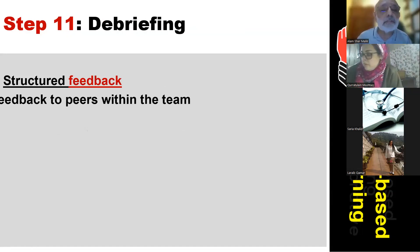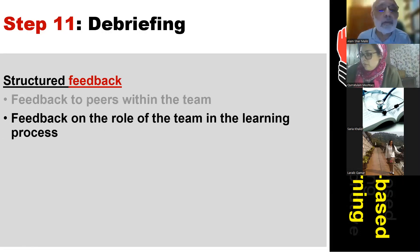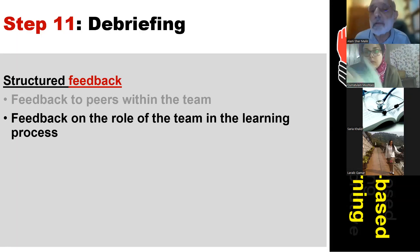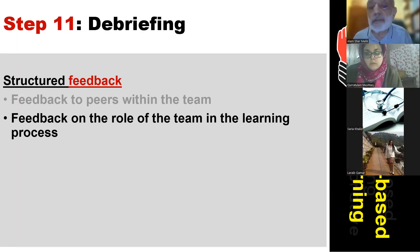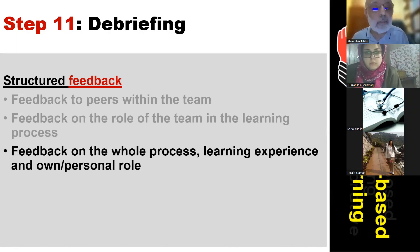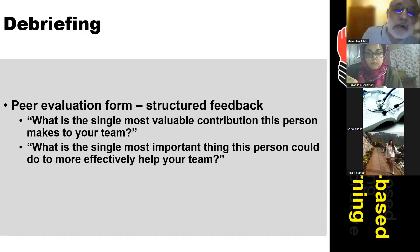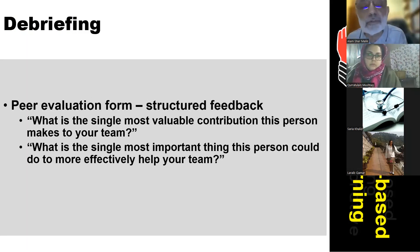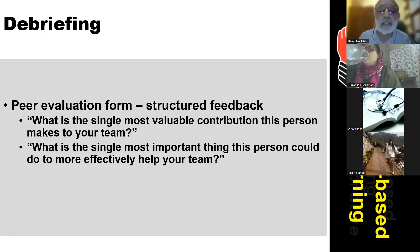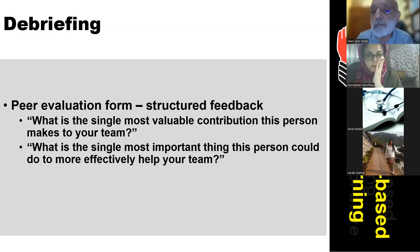Step eleven is structured feedback — feedback to peers within the team, or feedback on the role of the team in the learning process. It is not necessary to have this step after every session; you can do it maybe once a month, as doing it every time may not be very productive. Questions might include: what is the single most valuable contribution this person makes to your team, and what is the single most important thing this person could do to more effectively help your team? The purpose is to improve team performance, since the same team remains together for the whole term or semester.